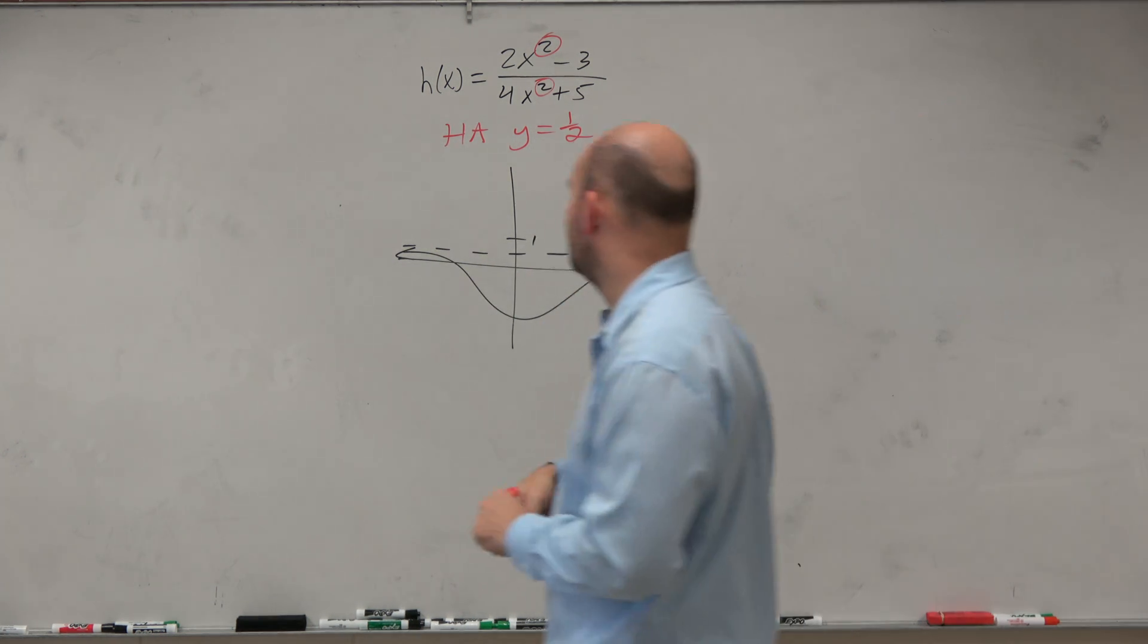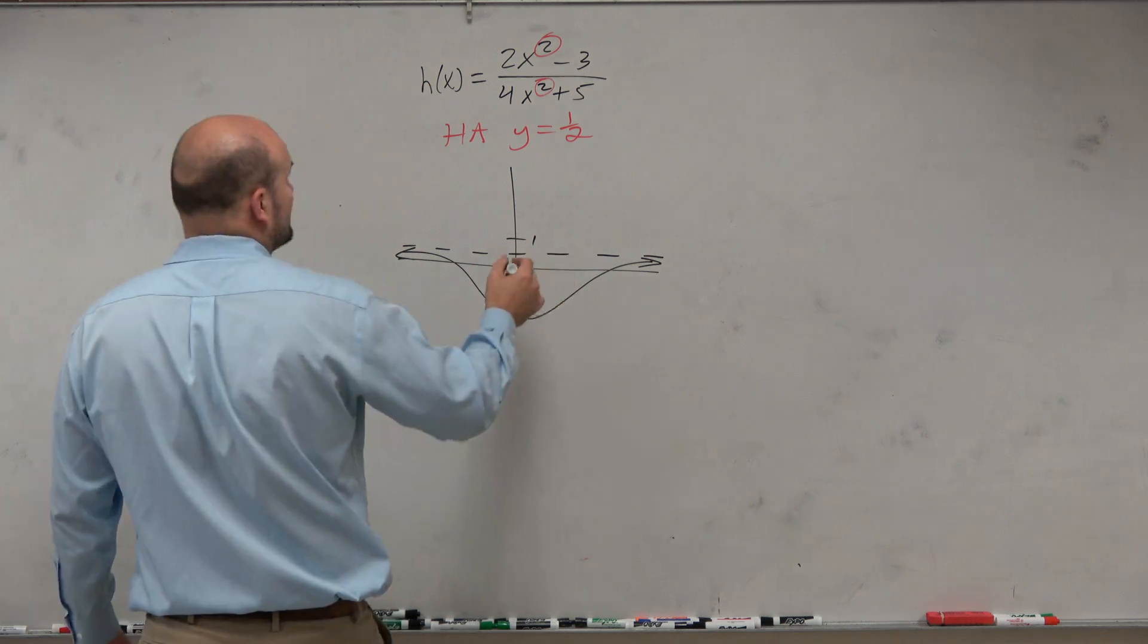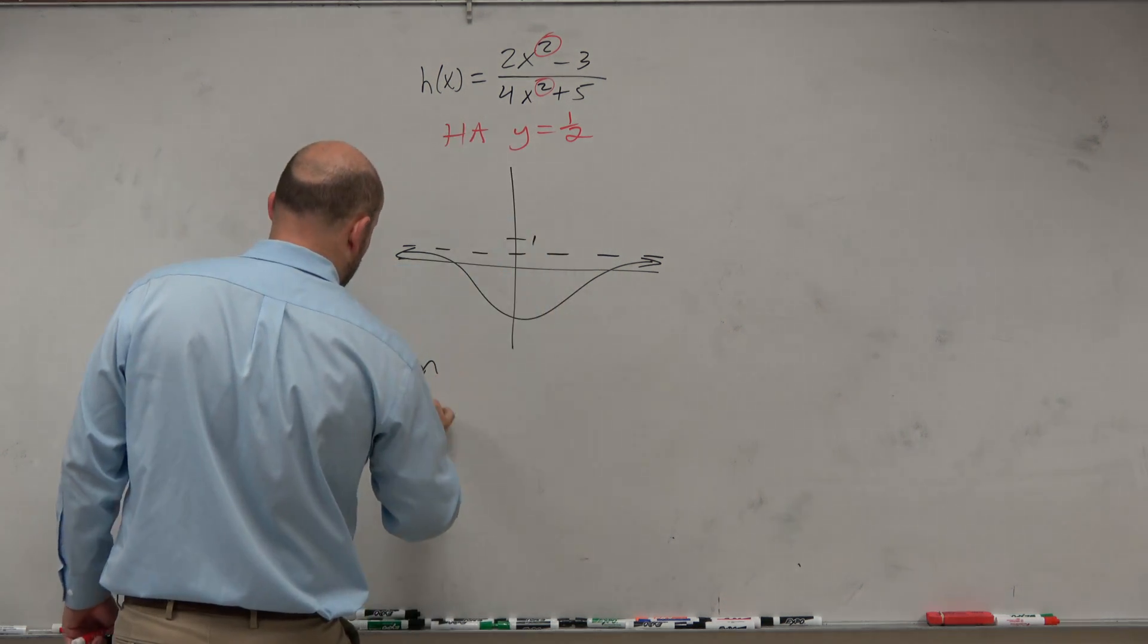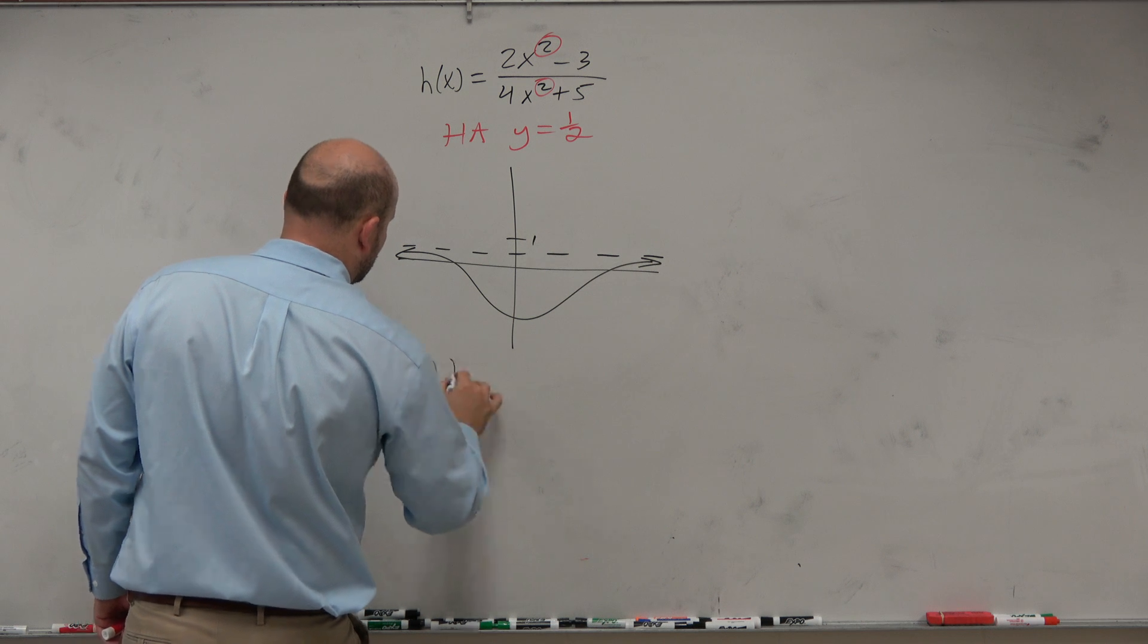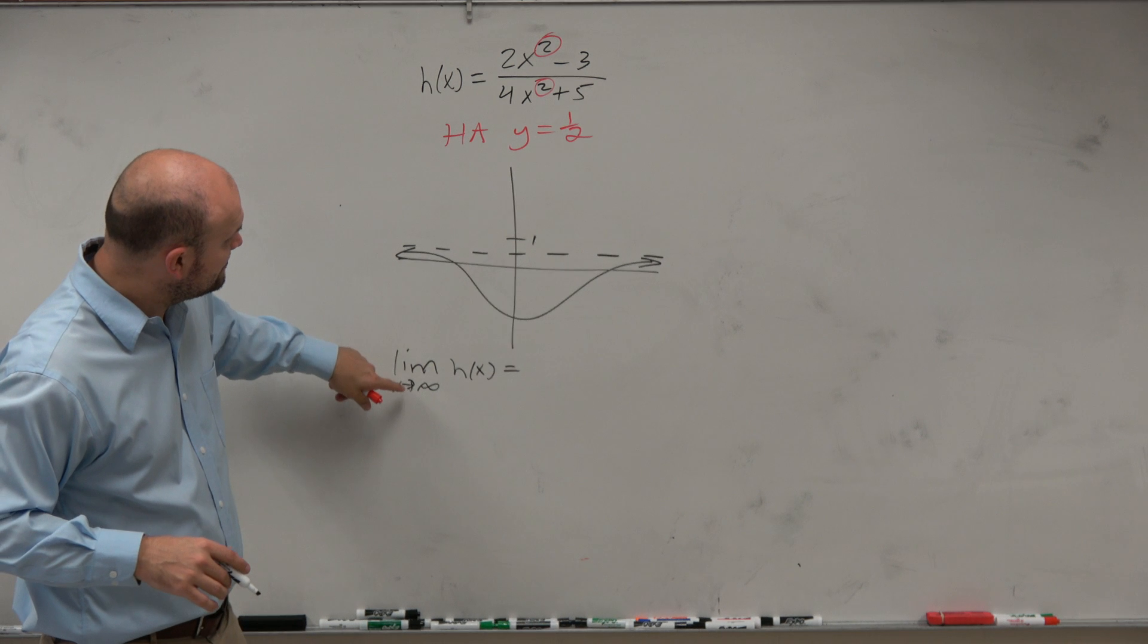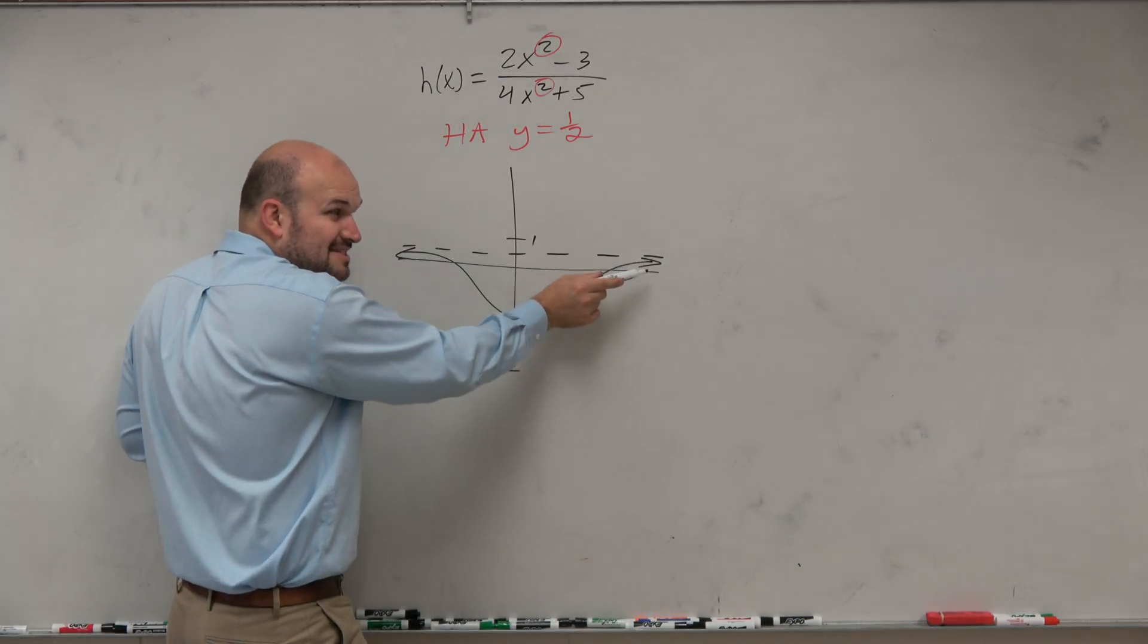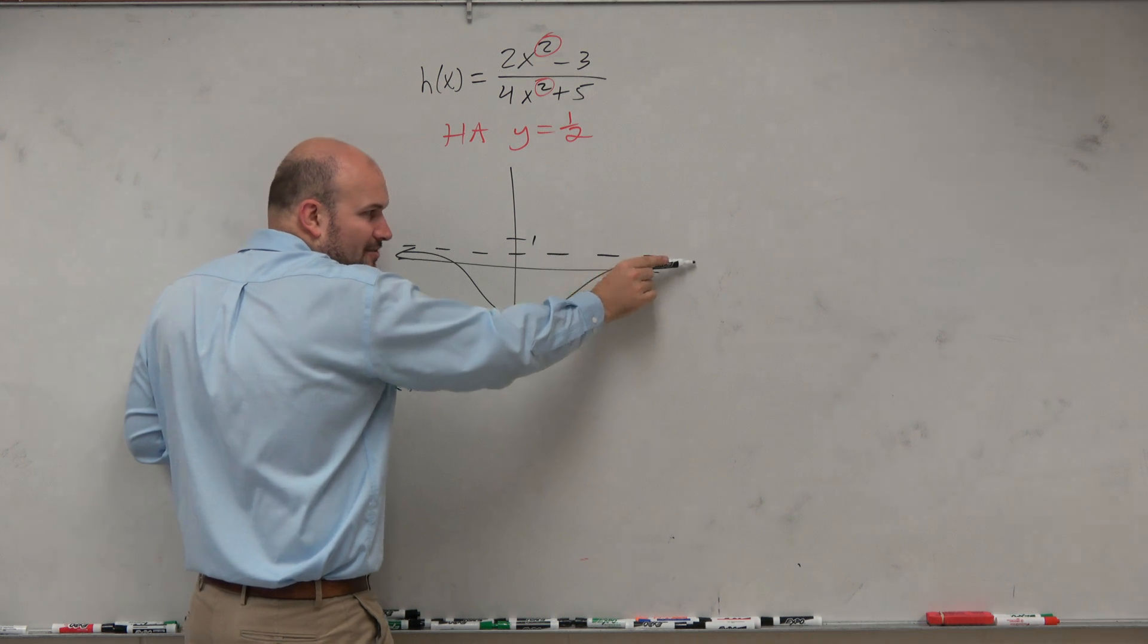So again, let's go on - oh, I didn't even ask what the question is. Limit of, let's call this h(x). So limit as x approaches infinity of h(x). As we go to infinity, I'm approaching my asymptote. What is the value of that asymptote?